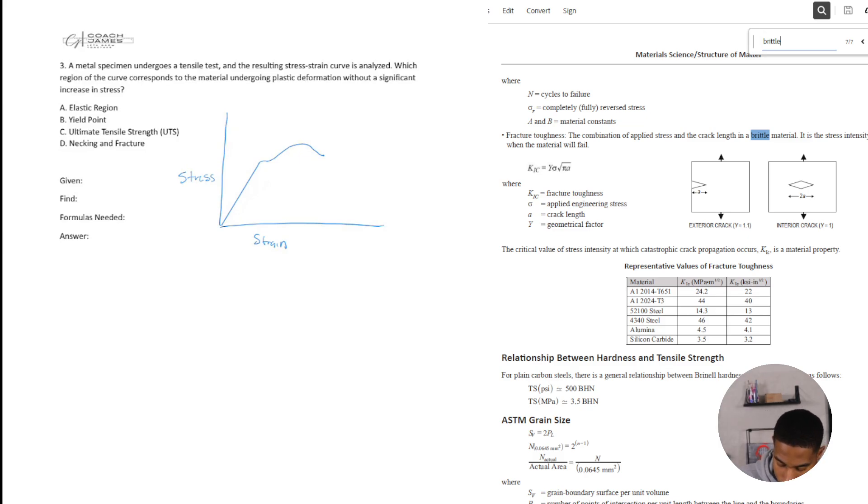Okay so that's kind of what happens on this and I've done an example on this already. So the elastic region. Okay, so which region of the curve corresponds to the material undergoing plastic deformation without the significant increase in stress? So it's not an increase, not a significant increase in stress there. Kind of flattens out and then it picks back up.